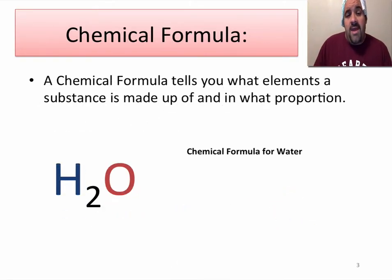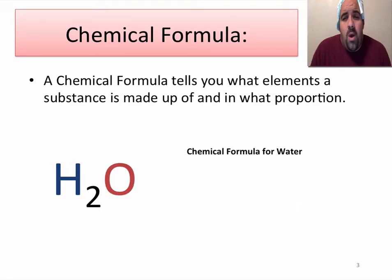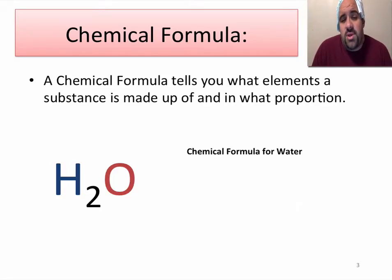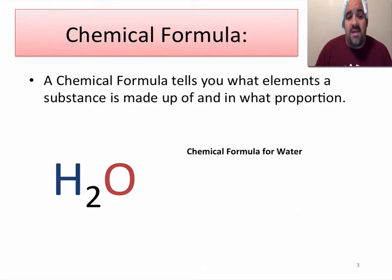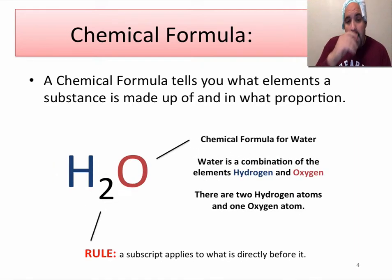A chemical formula tells us what elements a substance is made up of and in their proportion. Here we have water, H2O — that is the chemical formula for water and it tells us what water is made up of.